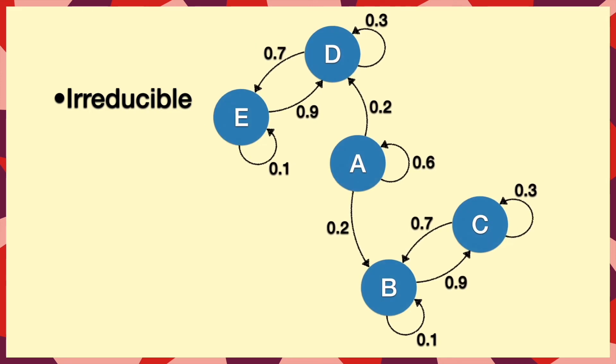Firstly, the chain needs to be irreducible. This means we need to be able to get from any state to any other state, which isn't the case in this example here. If we started at A, we would eventually get stuck in either B and C, or in D and E.